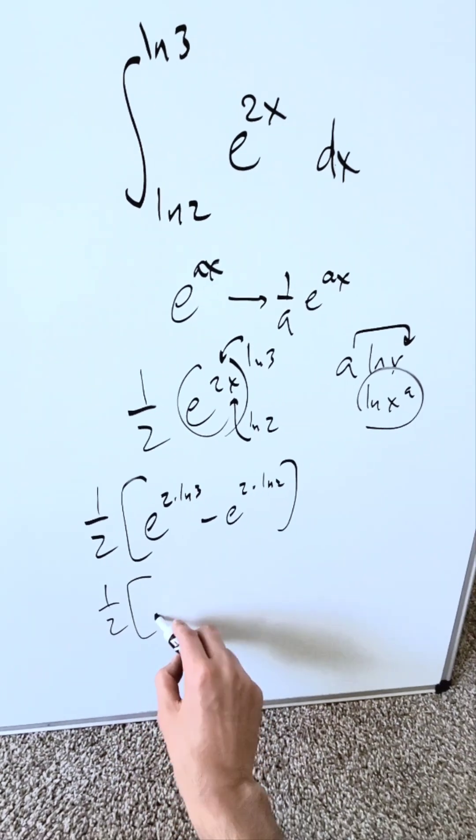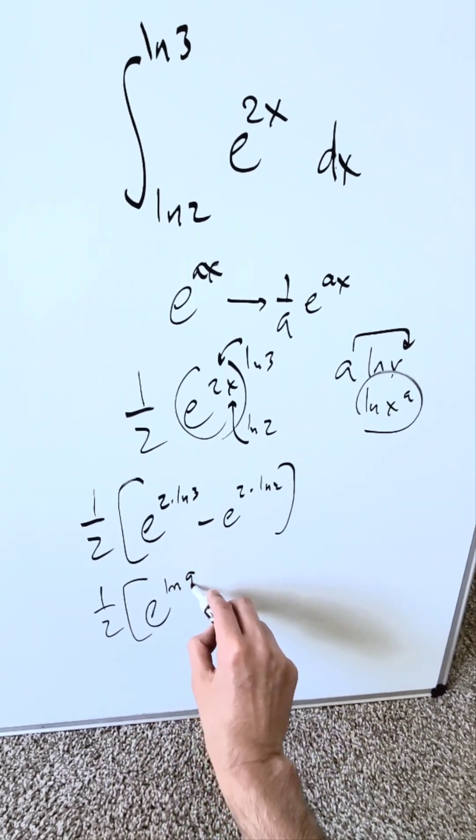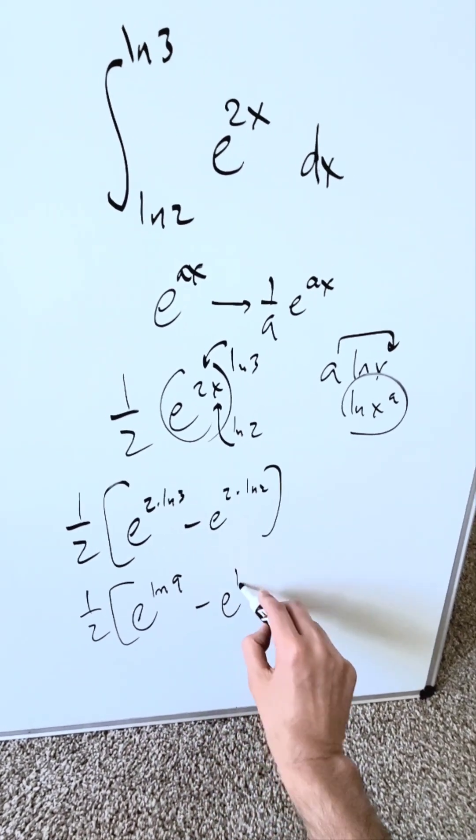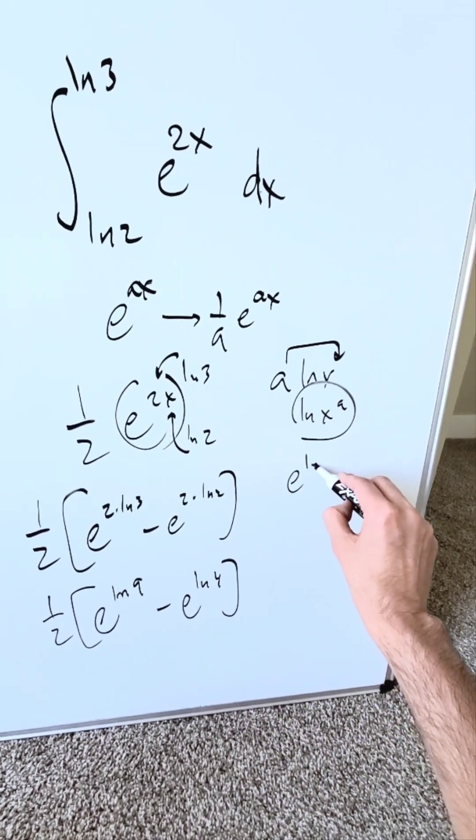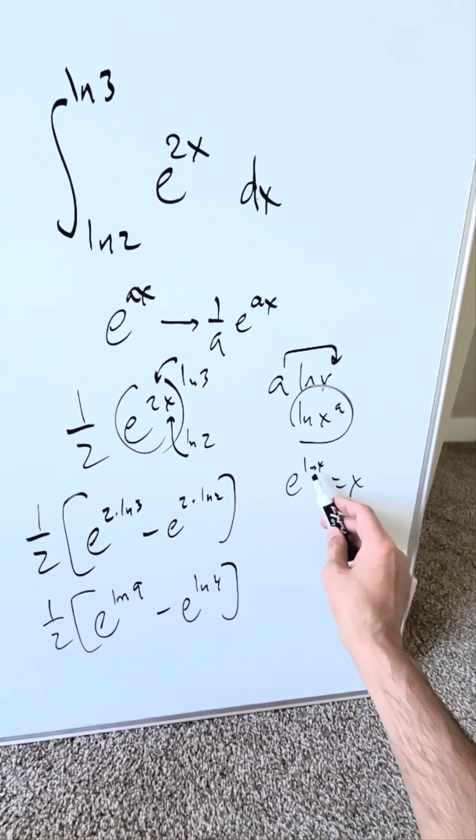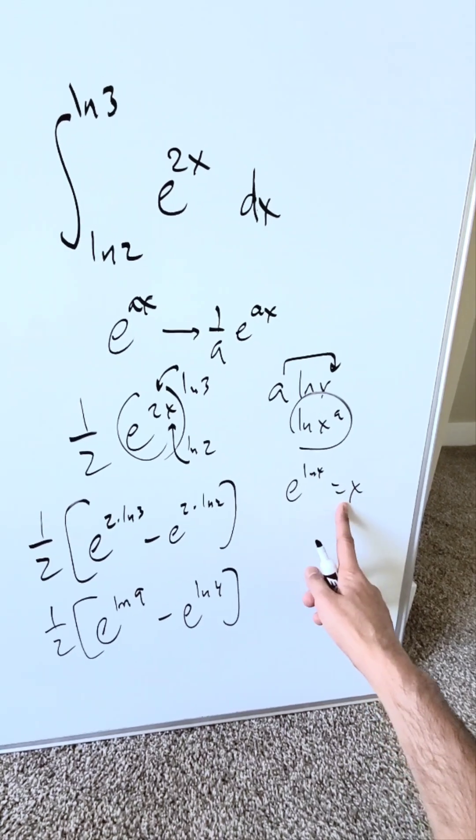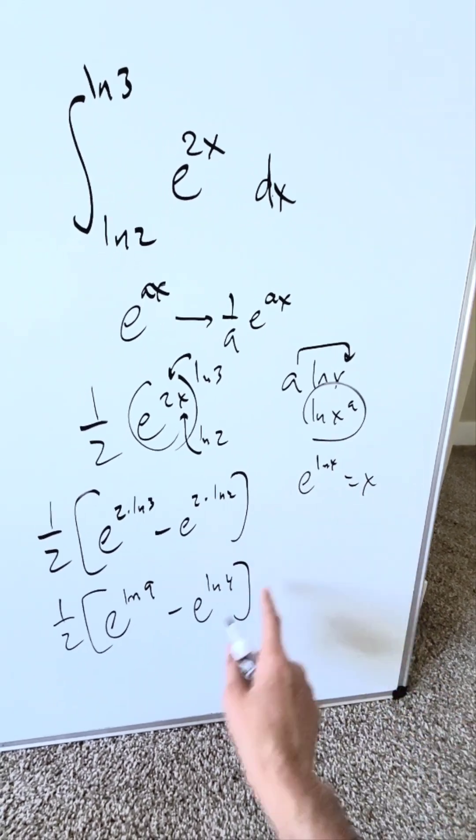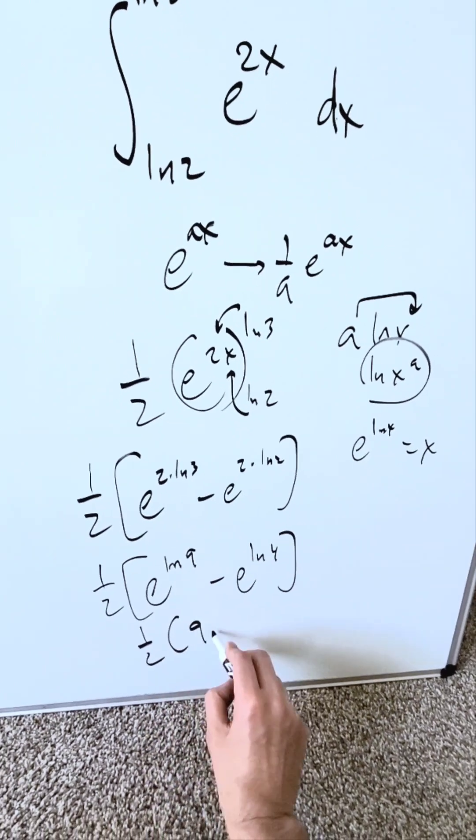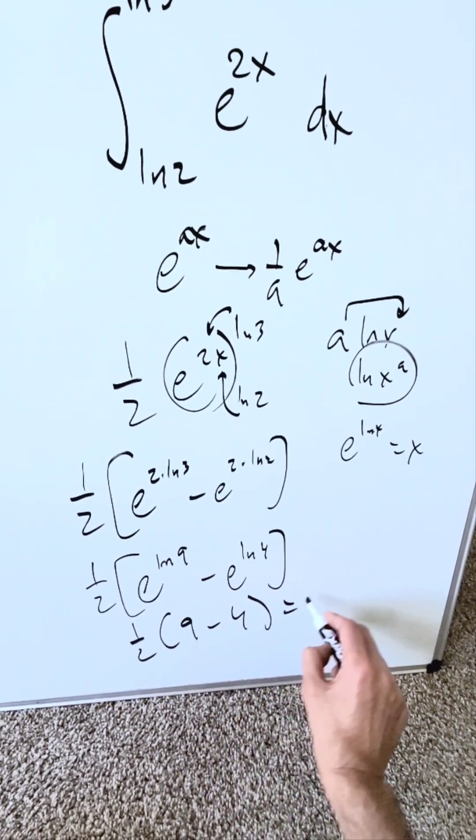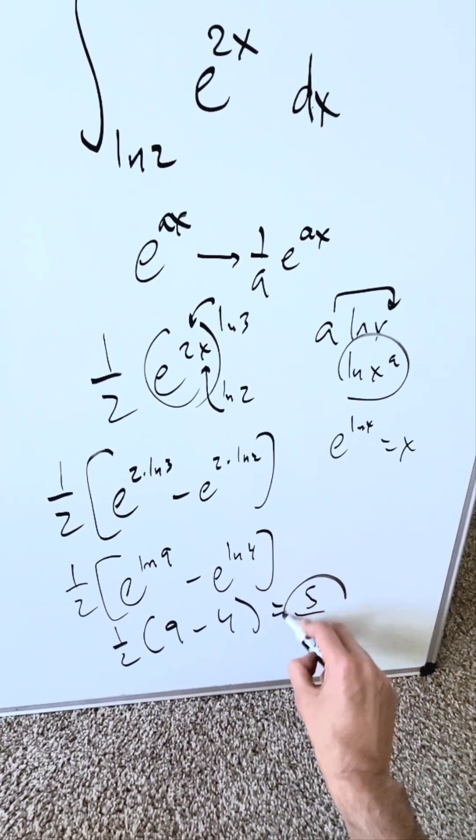1 over 2 e to the power of natural log 9 minus e to the power of natural log 4. Use another property. e to the power of natural log x is always equal to x. You can prove this, but I won't in this video, but this right there is equal to that x. I have over here 1 over 2, 9 minus 4, 5 over 2 is our end result and it will be correct.